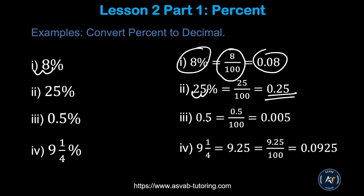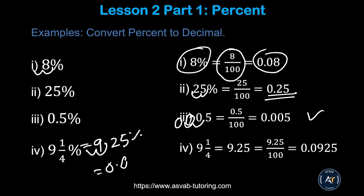For 0.5 percent, move two decimal places to the left — if you don't have enough digits, fill with zeros — giving you 0.005. For nine and a quarter percent, that's 9.25 percent; move two decimal places to get 0.0925. That is the fundamental thing you need to remember about converting percent to decimal.